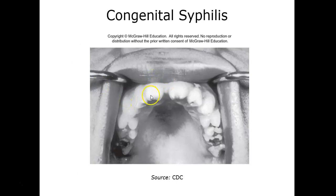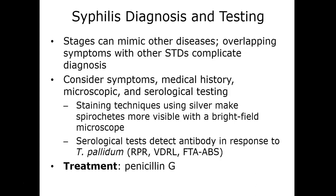Here is an example of Hutchinson's teeth, where they become notched and barrel-shaped. The stages of syphilis can mimic several other diseases and STIs, complicating diagnosis. Serological blood testing is used during the latent period. The dark field microscope is the common microscopy method, and there are also silver staining techniques that make spirochetes more visible under the bright field microscope. Treatment is often penicillin.